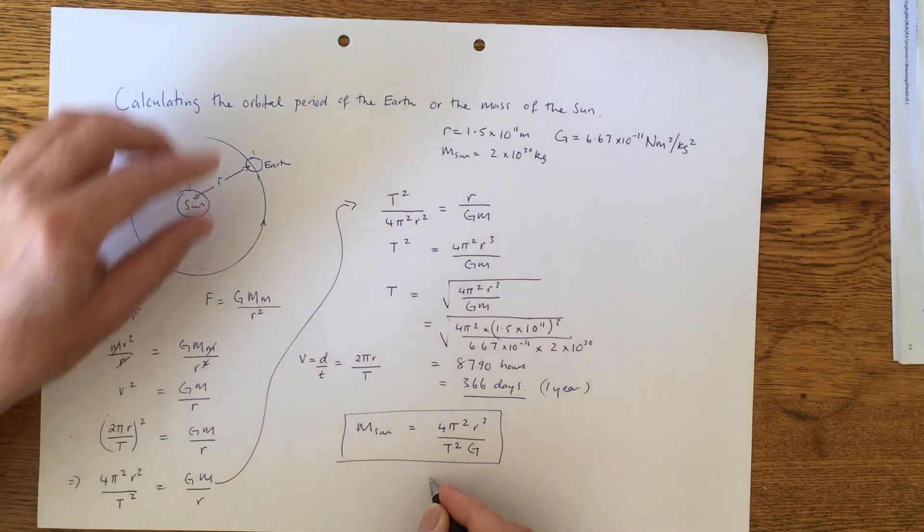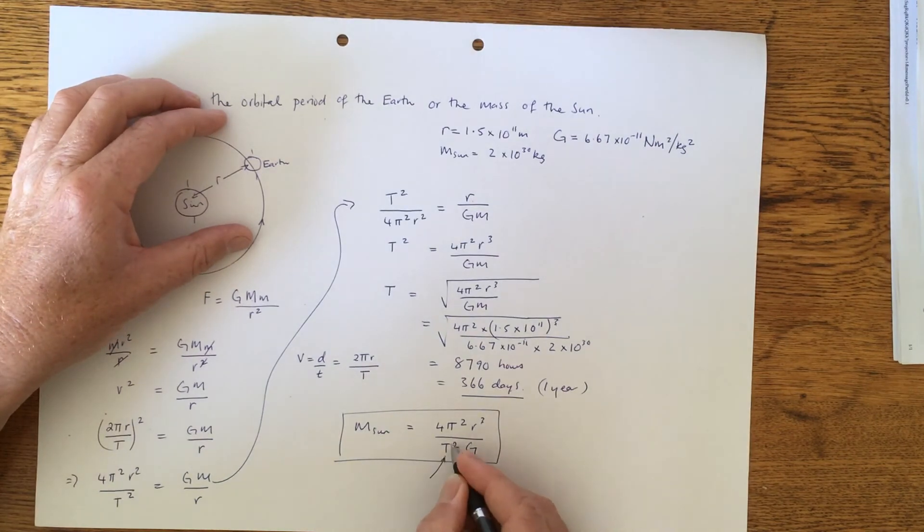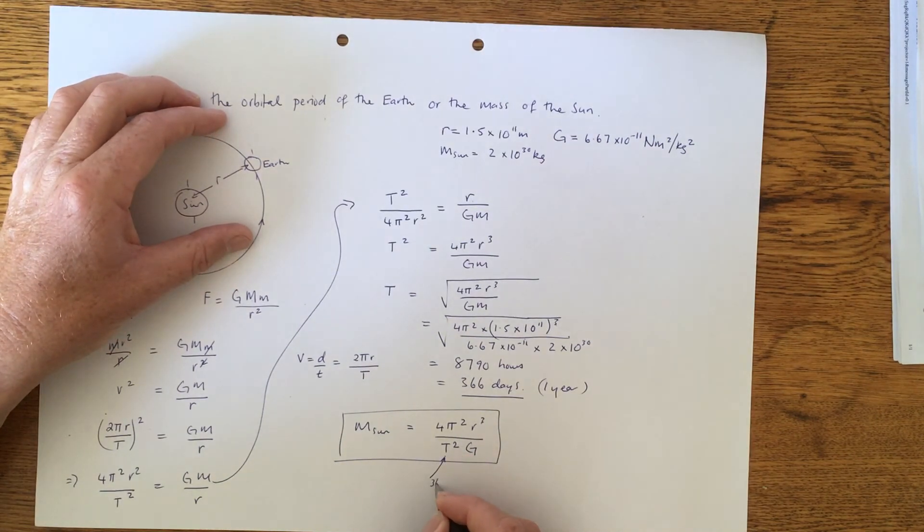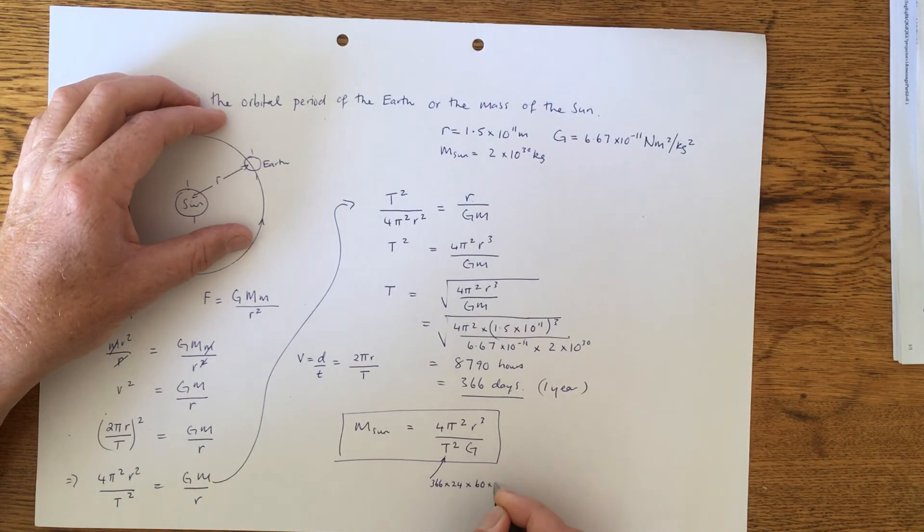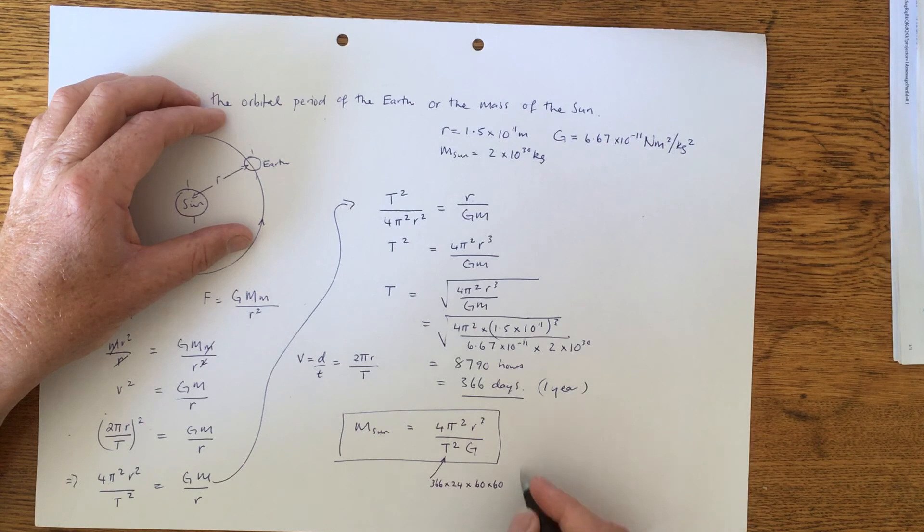And just remember that the period now is going to be 365 times 24 times 60 times 60. So don't forget to remember to do that. It's not just 366 days. You have to put that all into seconds. And then it should equal around about 2 times 10 to the 30 kilograms, which is the mass of the Sun. Hope that helps.